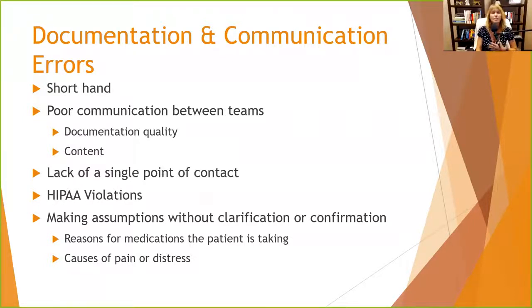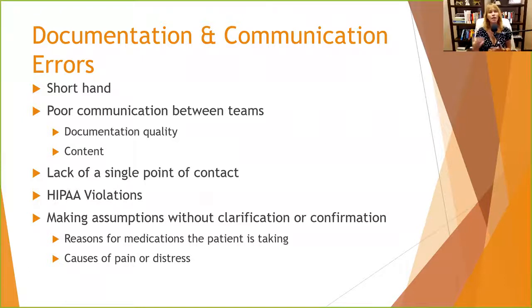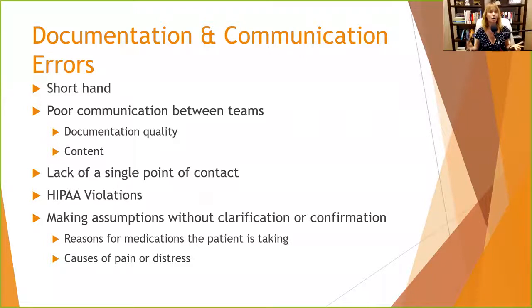There needs to be a single point of contact in a multidisciplinary team. If something starts to go awry with a client, we know who to contact to make sure everyone on the team gets the information. With five people on a team, we don't want four of them calling the doctor and four calling the clinician to tell them the same thing. When something goes wrong, who do we tell?